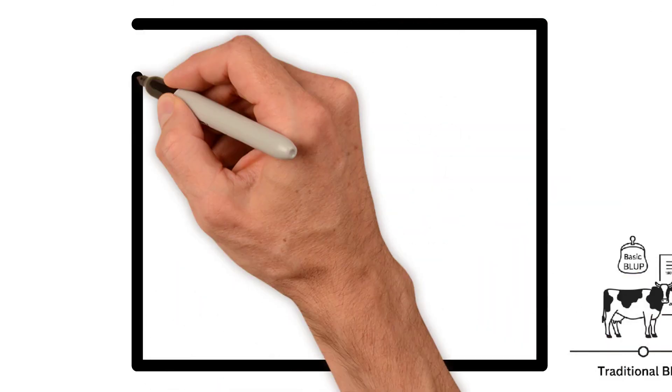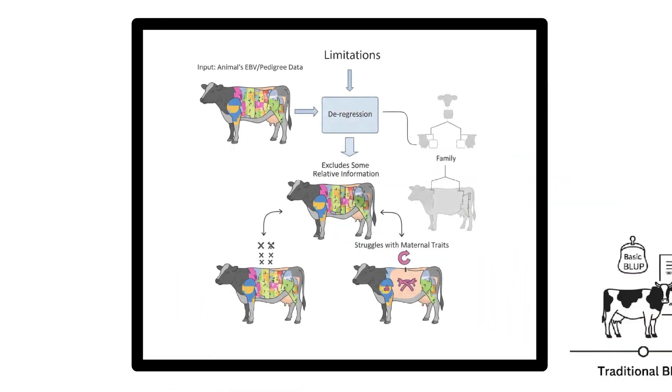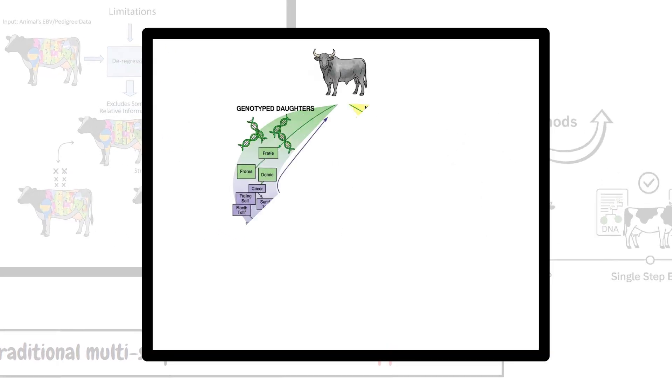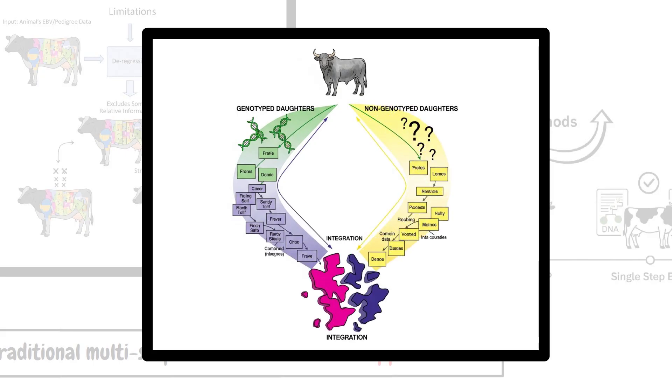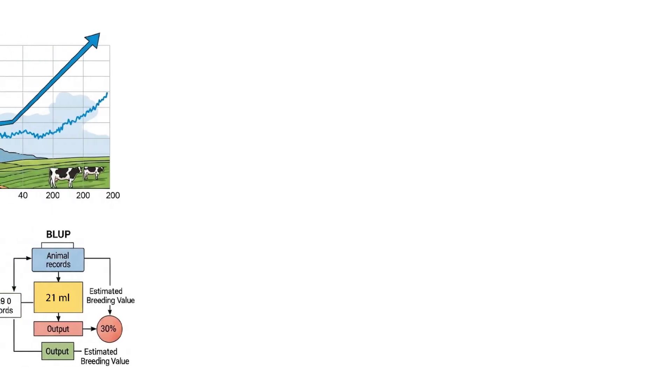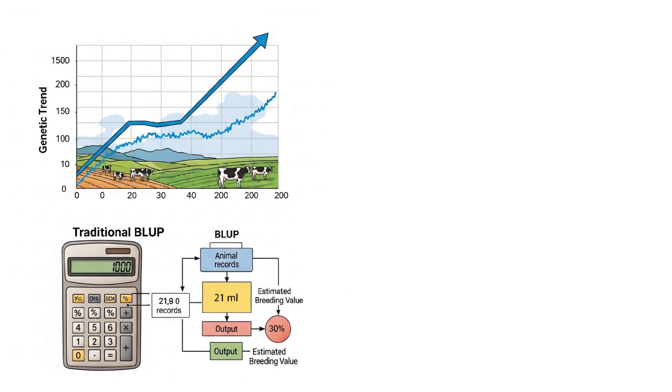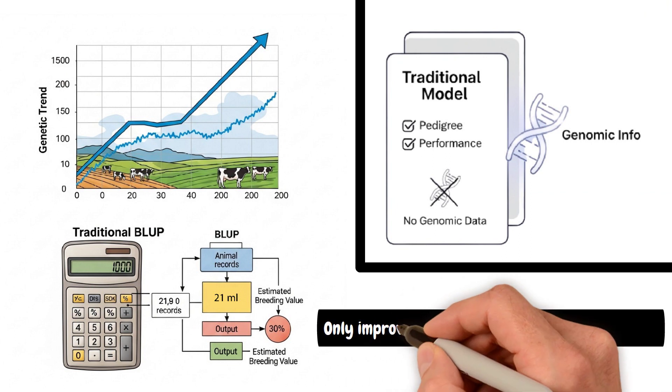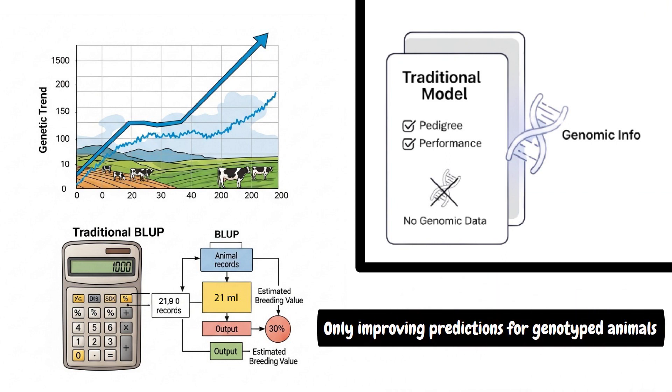For example, the deregression step doesn't include all relatives and does not work well for maternal traits. And it's complicated to correctly use all daughter information on a bull when some are genotyped and others are not. Also, genetic trends are estimated using the traditional model, which means that genomic selection has not been taken into account. Lastly, the genomic data is only improving predictions for genotyped animals.